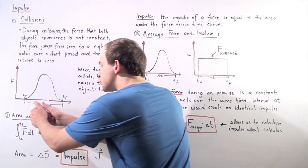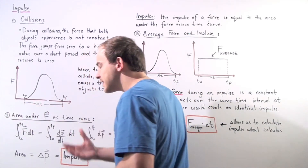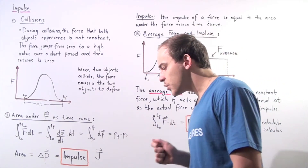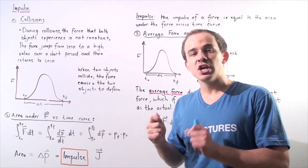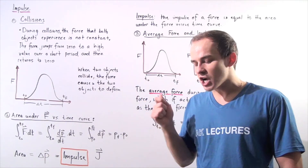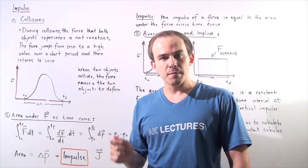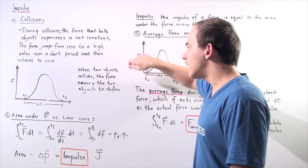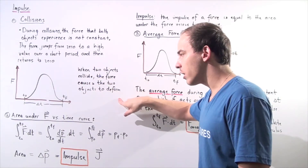This change in time — this time period — is the time elapsed during our collision. What happens to our objects when they actually collide is the force caused by the two objects on one another causes a slight deformation in the object. So when two or more objects collide, the force causes the two objects to deform.